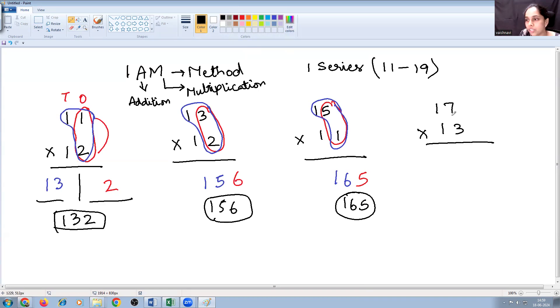Now, 17 into 13. Now, 7 into 3 is how much? 21. 17 plus 3. The left portion of the answer, 17 plus 3 is how much? 20. We all know. We have done it in our previous class. So what am I supposed to do? I need to add these two digits. So your final answer is 221.